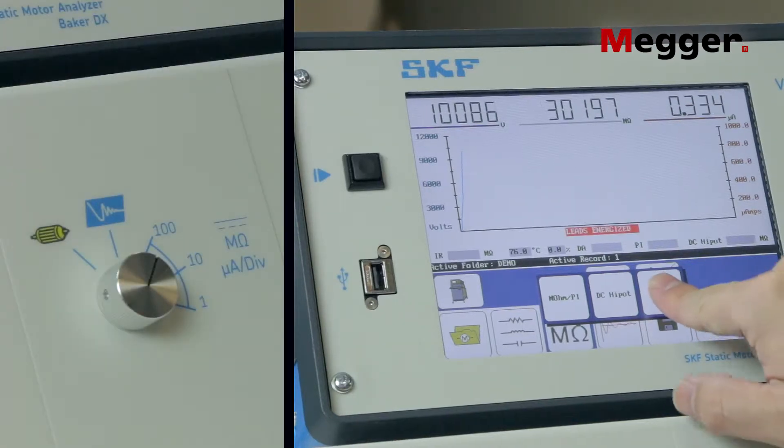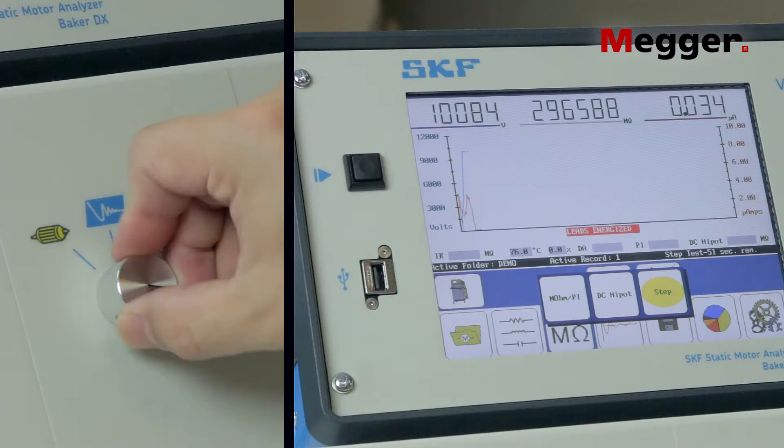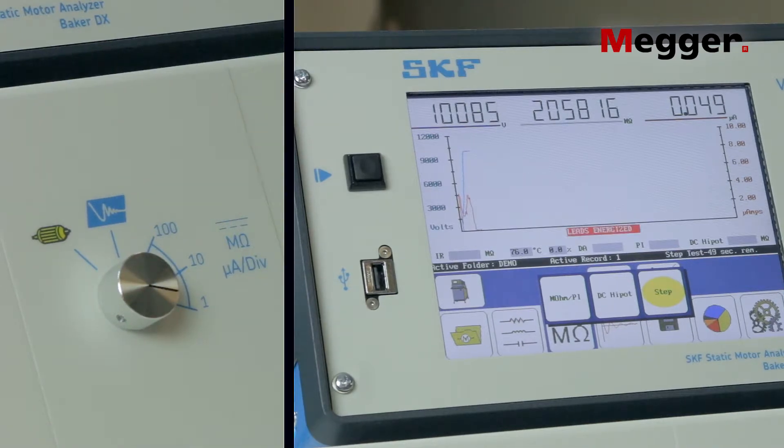Press the step button to initiate the step timer, which by default will be one minute long. While the voltage is held at a constant value, the leakage current will diminish over time. If the current value falls below half of the lowest division, turn the power pack's function knob to 10 microamps per division.